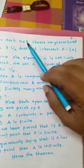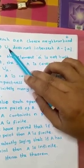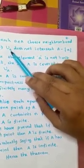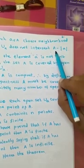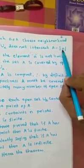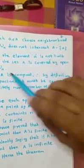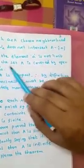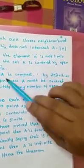Next, we take a point a in A and form a neighborhood with the help of the set A — we call it U_a. This neighborhood U_a does not intersect the complement of the set A minus the element a. Since a is not a limit point, the set A is covered by the open sets of the form U_a.